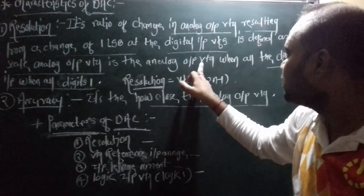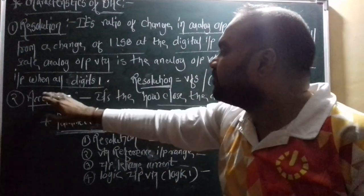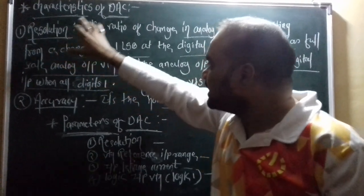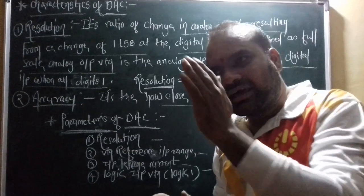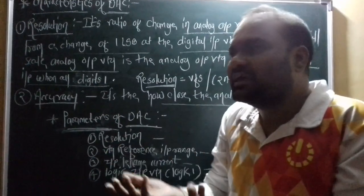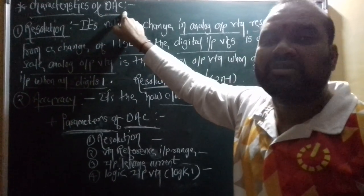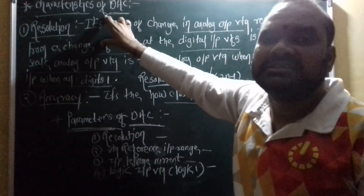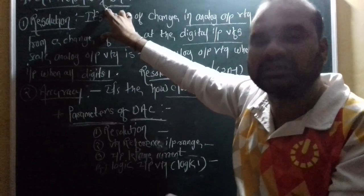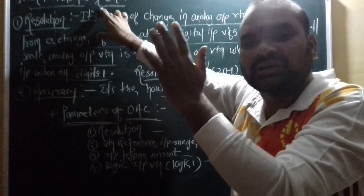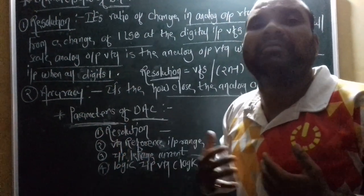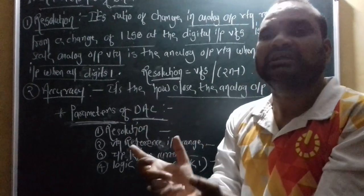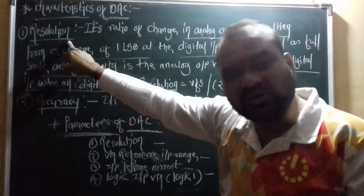It is the analog output voltage when all the digital inputs are set. To understand resolution — it means clarity. When you have a digital-to-analog signal, the analog output voltage should give the best result and best output. When we have analog output voltage successfully, that is the resolution.